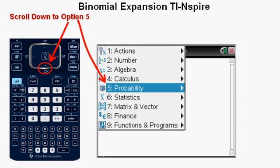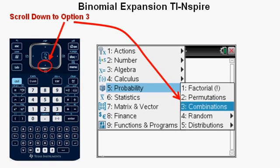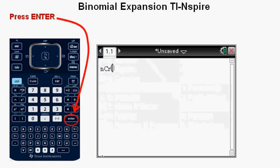Scroll down to menu option 5, probability. Press enter. Instead of scrolling down to option 5 and pressing enter, you could just press the 5 key. Scroll down to option 3, combinations. Press enter.